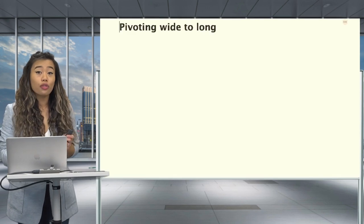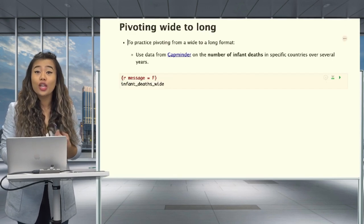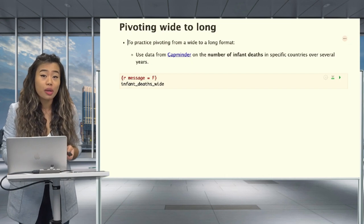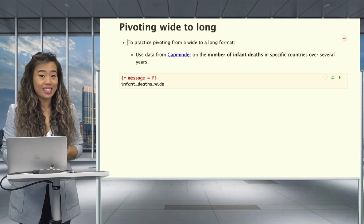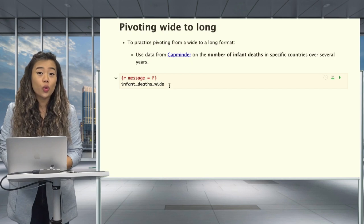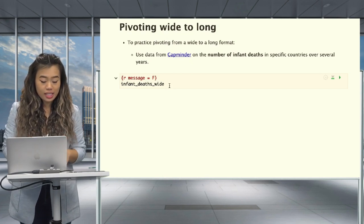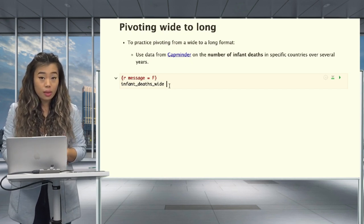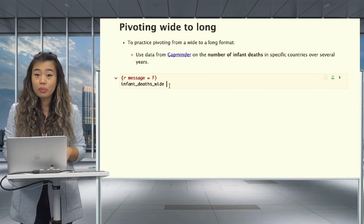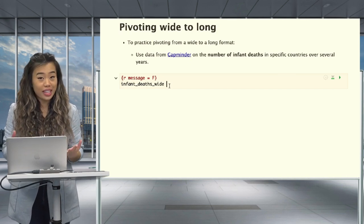To begin, we'll first practice pivoting from wide to long formats, using data from Gapminder on the number of infant deaths collected in some countries over the past several years. So let's begin with loading the data set. This is something that you should all be familiar with since we've done it quite a few times over the lessons.